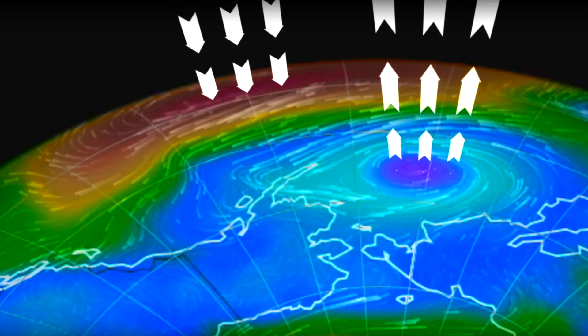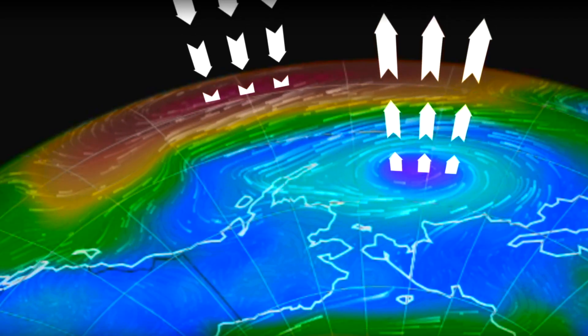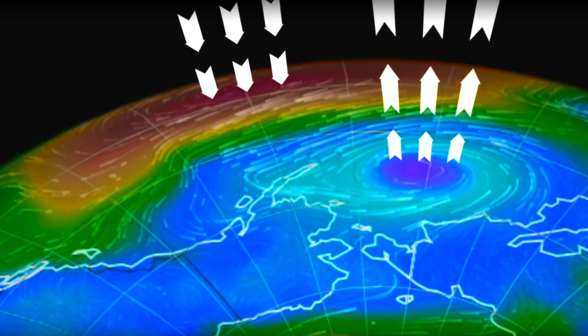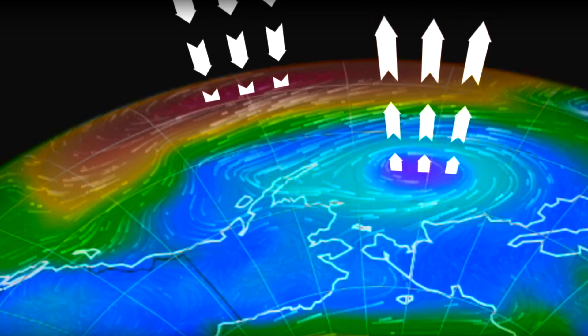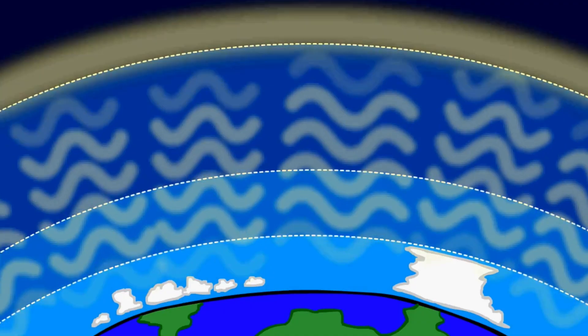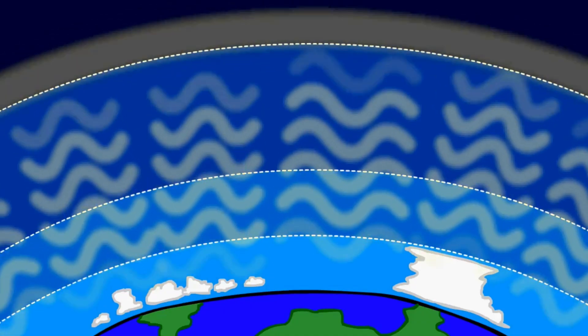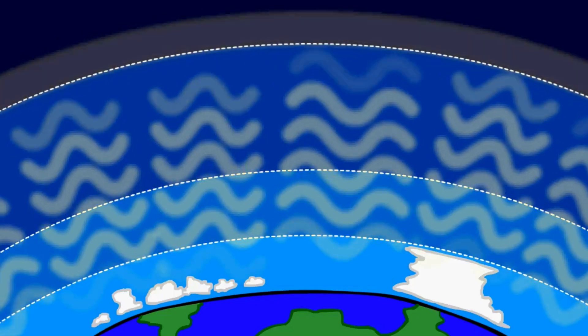While this is happening, the ionospheric energization juices up the global electric circuit which transfers that energy back and forth from the ground to the top of the sky. The current goes upward in storms and low pressure and comes down in fair weather, clear skies.